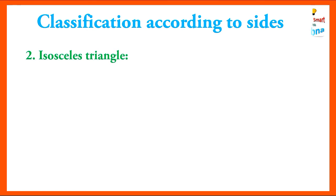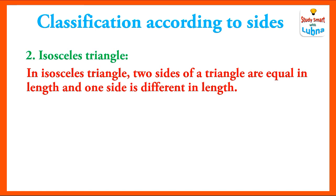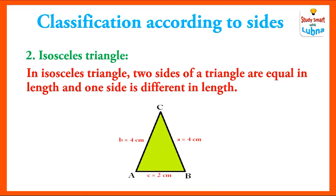The second triangle is isosceles triangle. In an isosceles triangle, two sides of a triangle are equal in length and one side is different in length. Here the length of AB (small c) equals 2 cm, BC (small a) equals 4 cm, and CA or AC (small b) equals 4 cm. So the length of sides AC and BC are both equal to 4 cm, while the third side AB equals 2 cm and is different in length.